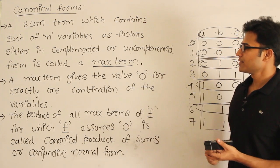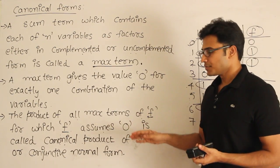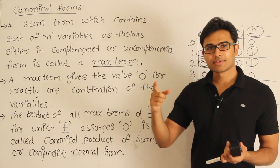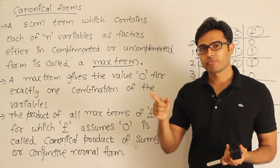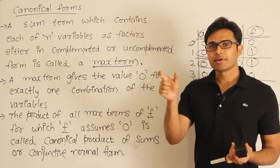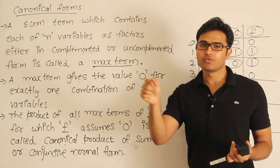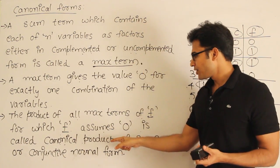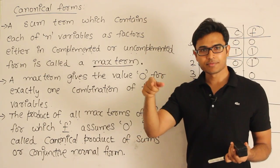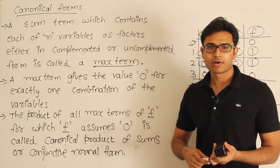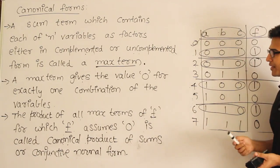One other canonical form is the Product of Sums — canonical product of sums. Previously we have seen sum of products. What is sum of products? It is nothing but product terms to which we apply a sum. Now what is product of sums? We have sums to which we apply a product. Let me take an example instead of using my hands.